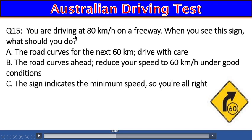Question 15: You are driving at 80 km/h on the freeway and see this sign. What should you do? A) The road curves for the next 60 km — drive with care, B) The road curves ahead — reduce your speed to 60 km/h under good conditions, C) The sign indicates the minimum speed. The right answer is B — reduce your speed to 60 km/h.